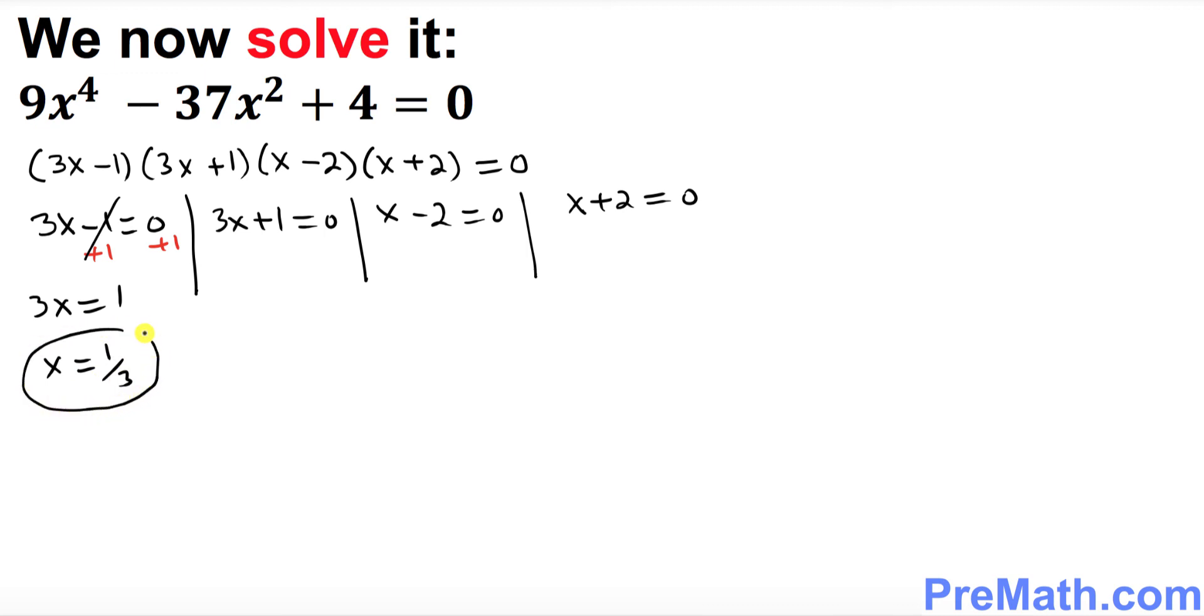Over here I want you to subtract 1 from both sides. So this cancels out. 3x equal to negative 1. You divide both sides by 3, so x turns out to be negative 1 over 3.